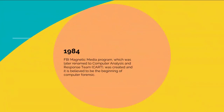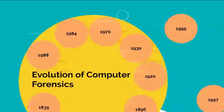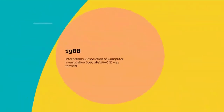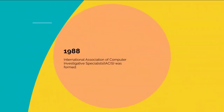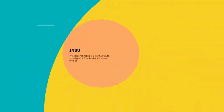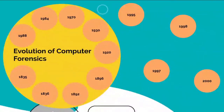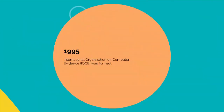In 1984, the FBI Magnetic Media Program, which was later renamed to Computer Analysis and Response Team, was created and is believed to be the beginning of computer forensics. In 1988, the International Association of Computer Investigative Specialists was formed. In 1995, the International Organization on Computer Evidence was formed.